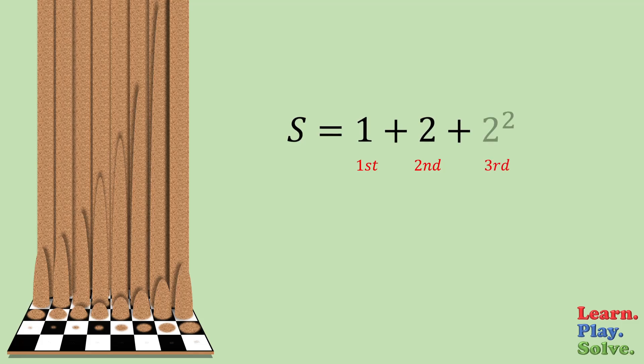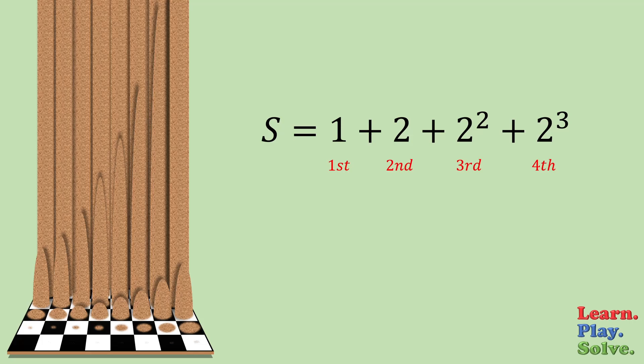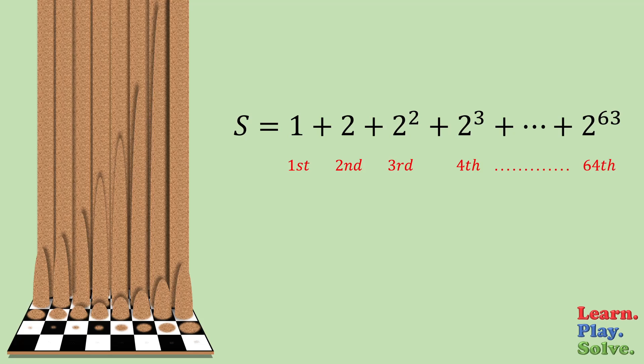And if we multiply that by two to get how much sand is in the next square, it'll be two to the third power. Every square will have two to a power that's one less than the number of that square. So the last square, the 64th, will have two to the 63rd grains of sand.